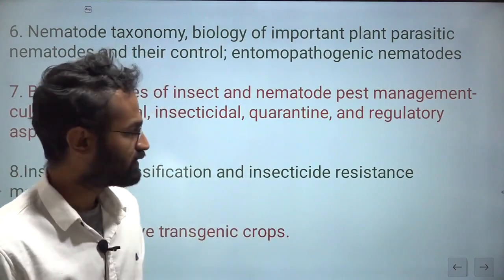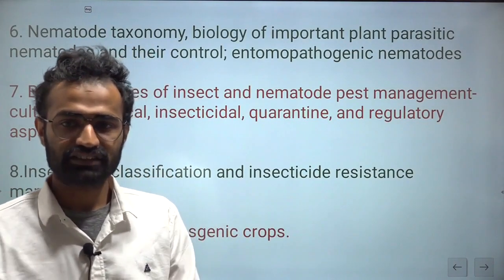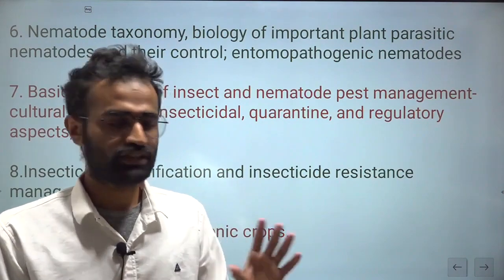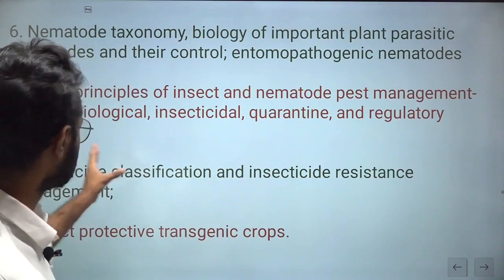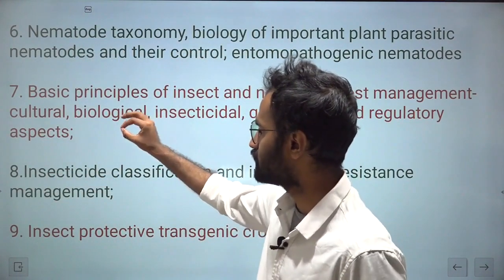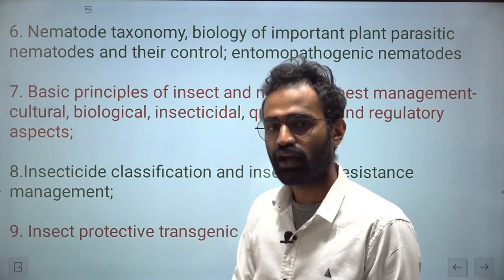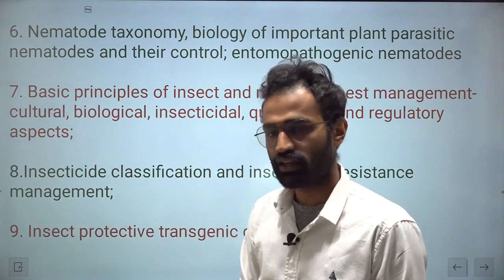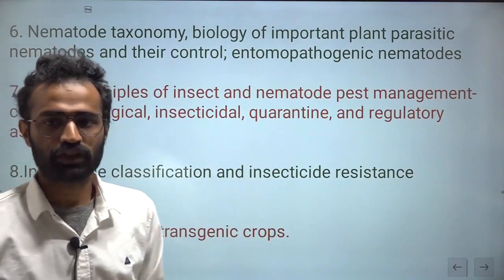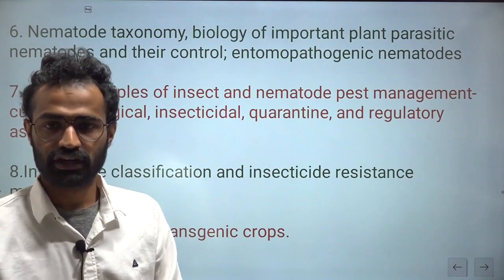That is the syllabus in brief as given by ICAR. The next step is to deconstruct the broader topics into smaller, manageable topics. For example, from insecticide classification, you can break it down into: history, basis of classification, different classification types, and modes of action. When you deconstruct the whole syllabus this way, you get a clear idea of how to proceed — where to start and where to end.